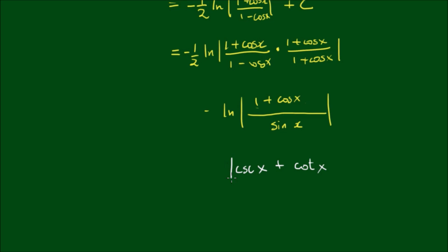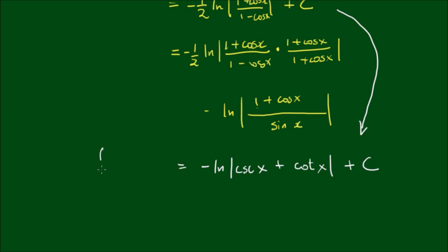The absolute value bars, the log, the negative sign, and the plus c all carry through. So the indefinite integral of cosecant of x with respect to x is equal to negative log of the absolute value of cosecant of x plus cotangent of x, plus c.